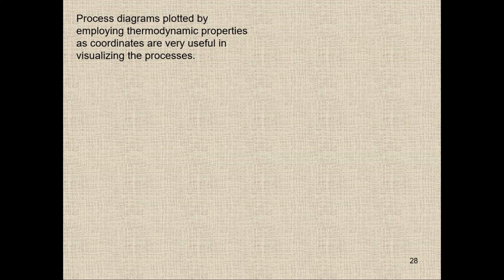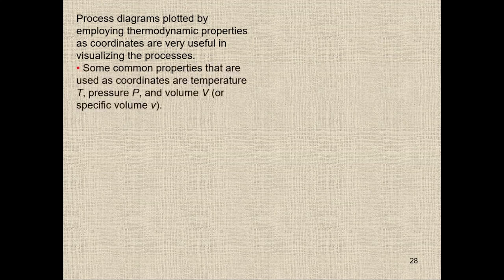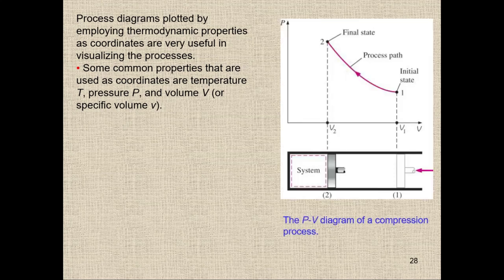Whenever we have processes, we normally show them on a process diagram. You have already seen some process diagrams — for example, the PV diagram when you were drawing the Carnot cycle in your second year. Common properties used as coordinates are temperature, pressure, and volume or specific volume. This is a process diagram on a PV diagram — the y-axis is P and the x-axis is V.